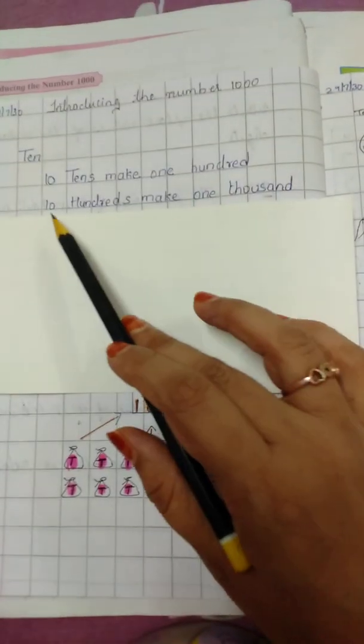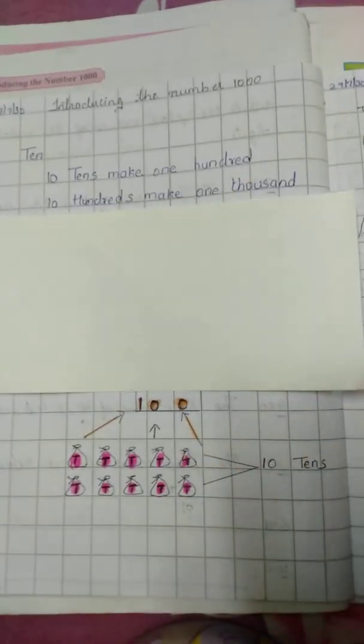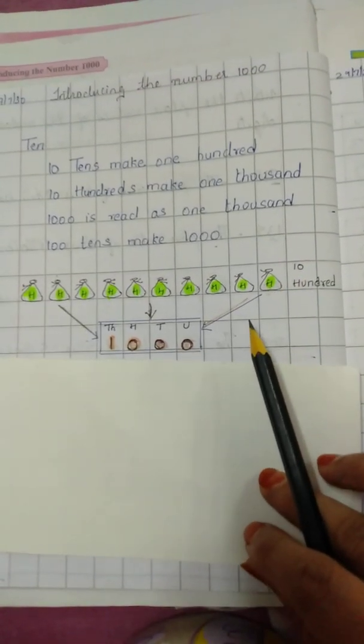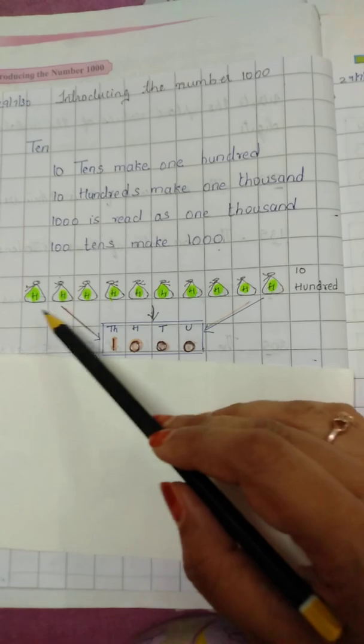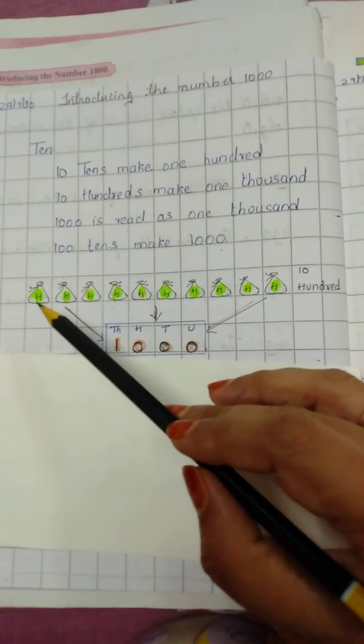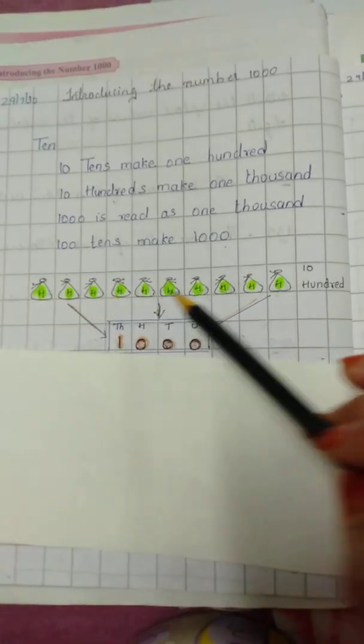What makes 1000? 10 hundreds make 1000. See, you can see here, 10 hundreds. Now these are the pockets. Ye pockets hain jismein 100 beads hain. Yani 100 moti hain. Har ek mein 100 moti hain.